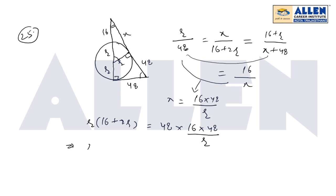So we will get expression as R squared into 16 plus 2R, will cancel 2 over here. So that is 8 plus R. So that is 8 into 48 squared.